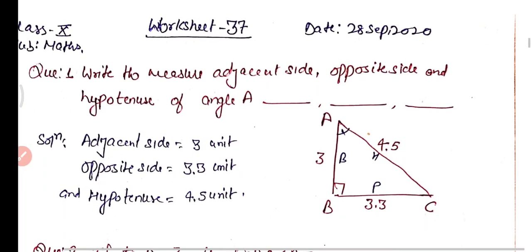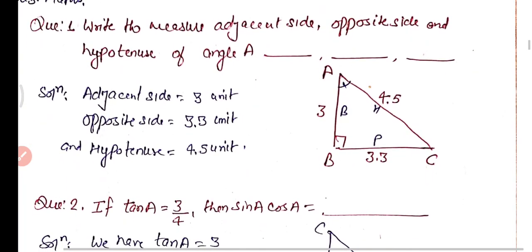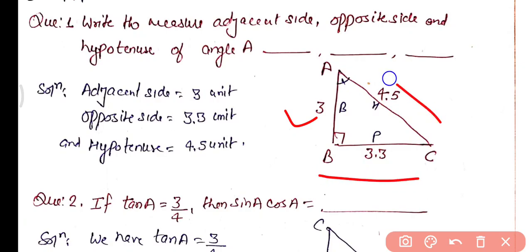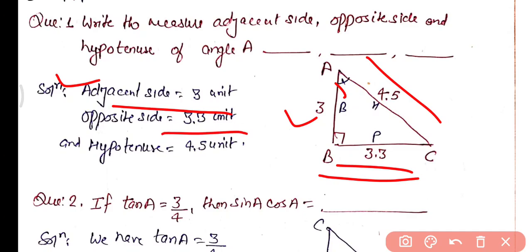Question 1: Write the measure of adjacent side, opposite side, and hypotenuse for angle A. We are given triangle ABC as you can see on the screen. AB is 3 units, BC is 3.3 units, and AC is 4.5 units. So the adjacent side is 3 units, opposite side (BC) is 3.3 units, and hypotenuse (AC) is 4.5 units.